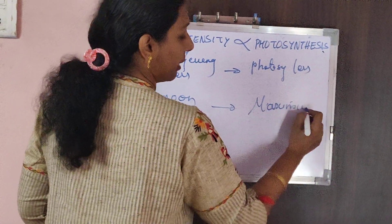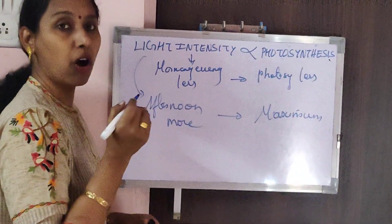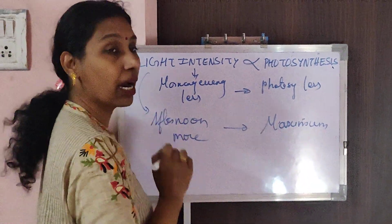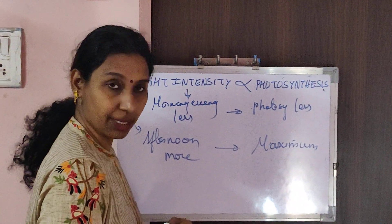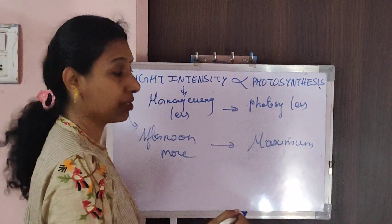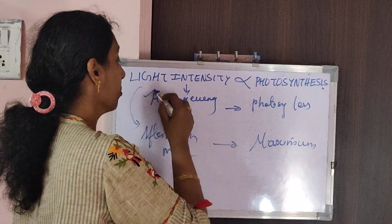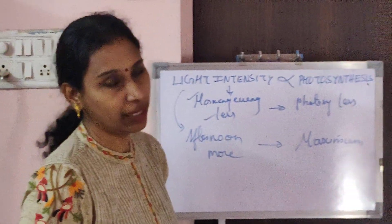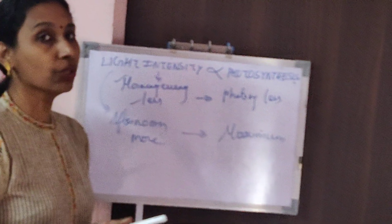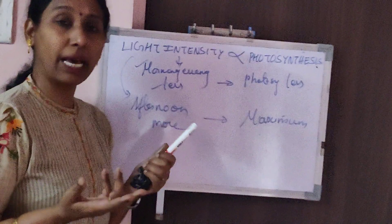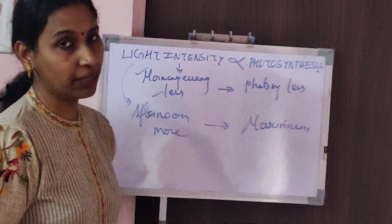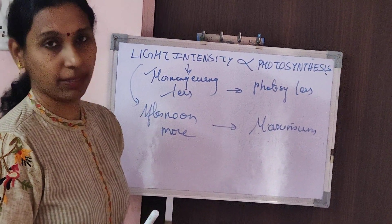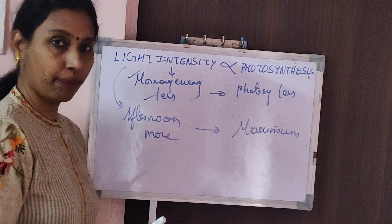Maximum oxygen is released during the afternoons; less oxygen is released during the morning and evening hours. And what about at night? No photosynthesis. So you don't have oxygen released out of the plant — it's only carbon dioxide which is released out of the plant.